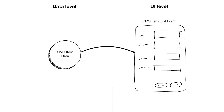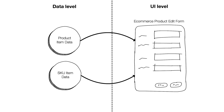This is how CMS Data Manager is built: for one item edit form, there is only one item on the data level that corresponds to it. But even in the first iteration for the eCommerce Data Manager, things looked different. For one product item edit form, two items were corresponding to this form — one was the product item and one was the SKU item. The product item contains data related to the product, like product name and product description.